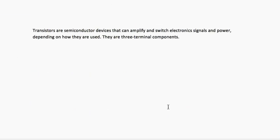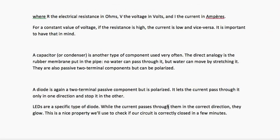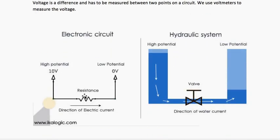Capacitance is measured in farads and is represented as F. The next component is a diode. A diode is a two-terminal passive component but it is polarized — it lets current pass through it only in one direction. An LED is a specific type of diode.